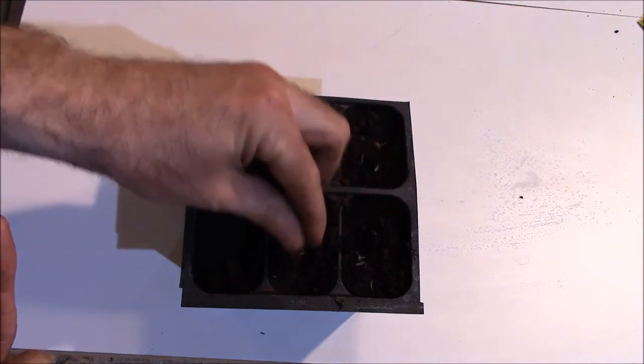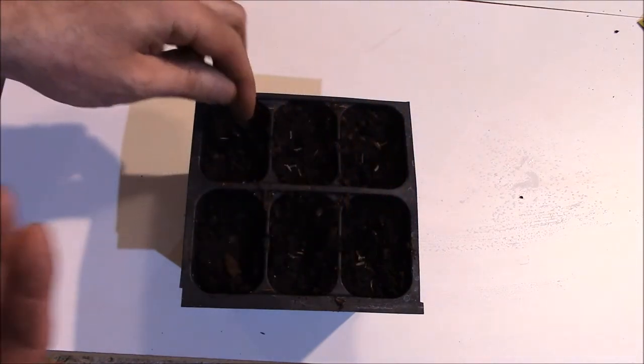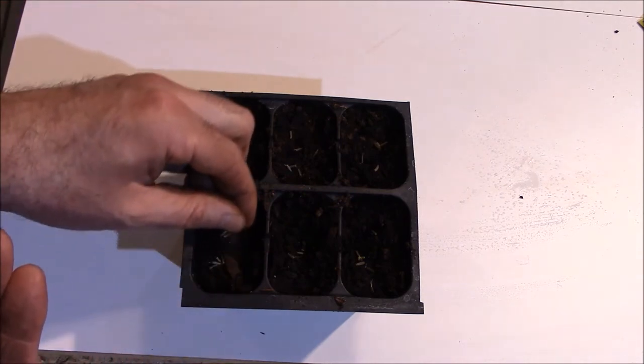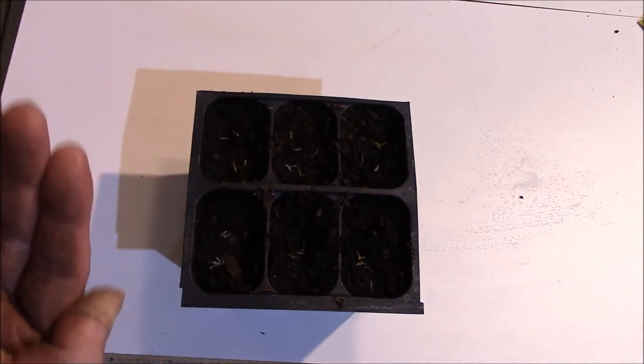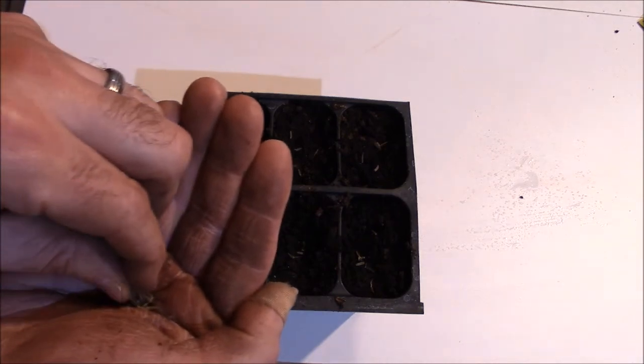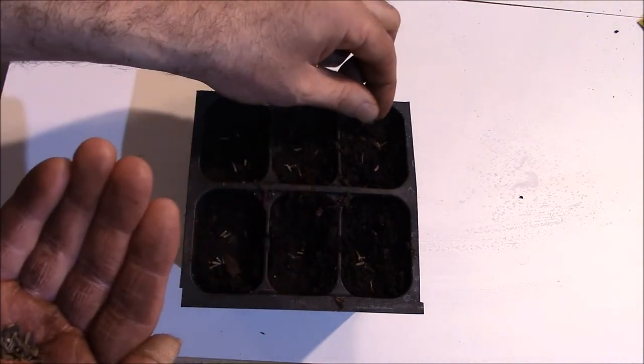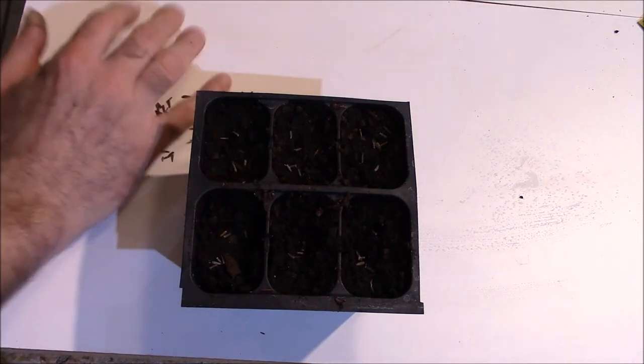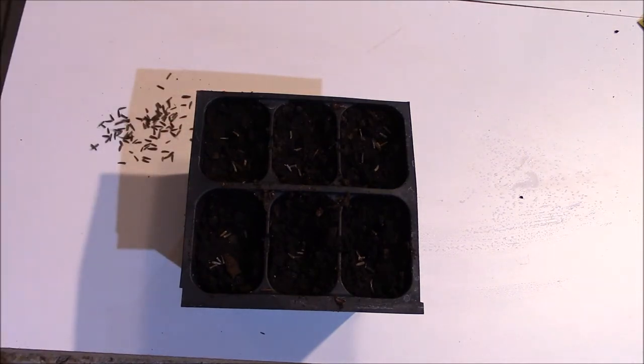I've got a lot of seeds so I'm not too worried about how many I put per cell but as long as you get 3 to 5 per cell you should be okay. You don't need to cover this up very deep at all. If you get excessive germination just grab some tweezers and start plucking them out.